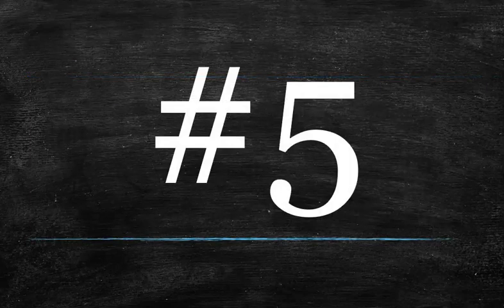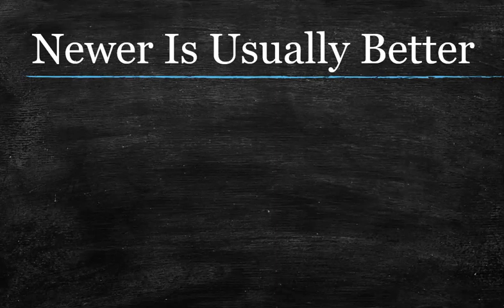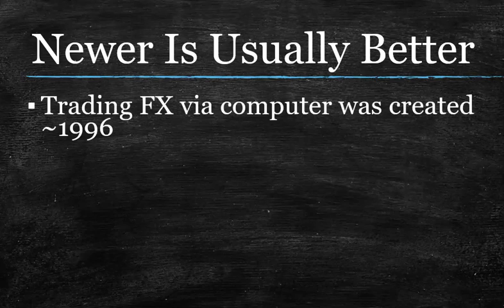Number five — I have alluded to this already, but I need to stress it. Newer is usually better. It is not always better, but it is usually better. Would you rather have a cell phone from 1993 or one that was made this year? The choice is typically very easy when you take a step back and look at it. Because spot Forex trading on your computer, which means it's widely available to the retail public now, has only been around since 1996.